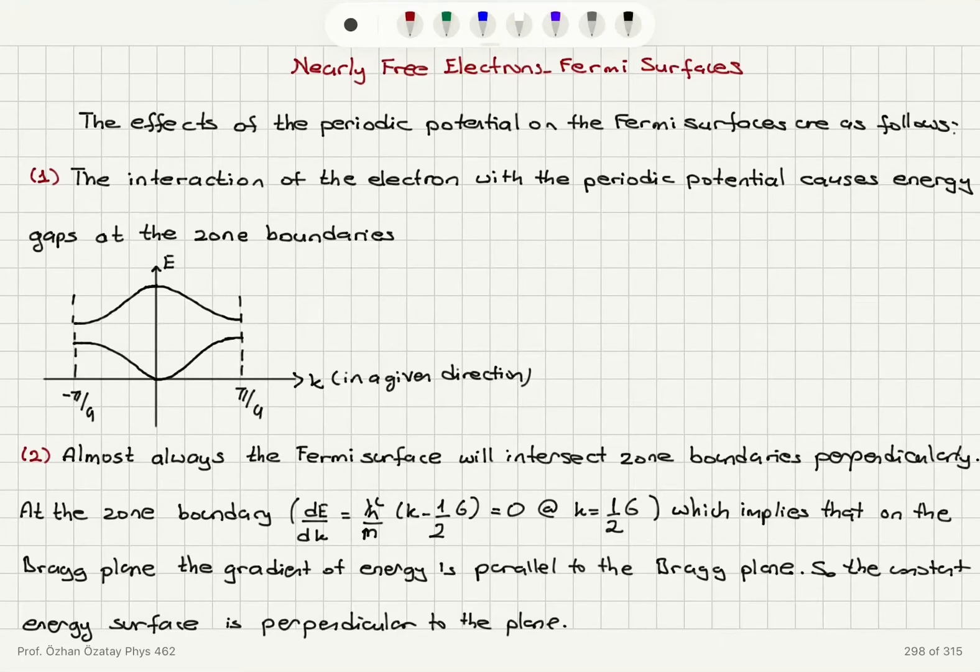We will finish our discussion of Fermi surfaces by considering the modifications that we need to have in the case of block electrons, that's nearly free electrons. The effects of the periodic potential on the Fermi surfaces can be summarized as follows.